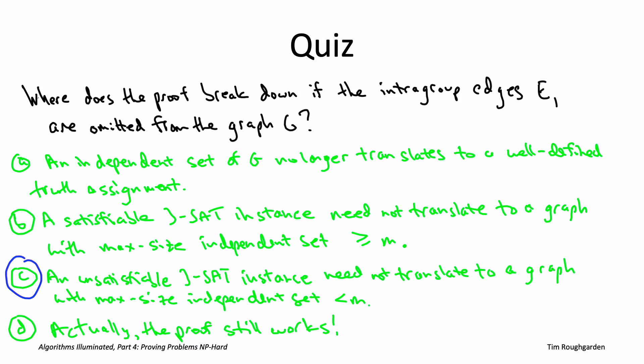The takeaway is that with NP-hardness reductions the devil is often in the details, and getting details wrong can make the reduction actually incorrect. That's why in our next three reductions we will always pause and carefully verify correctness. That's it for independent set — let's move on to directed Hamiltonian path in the next video.